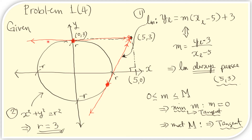Now that we know that the line with slope 0 is a tangent line, we can say that this line is perpendicular to the radius of the circle at the point of tangency. Because the slope is 0, this line is horizontal. Therefore, the distance from the point of tangency to the center of the circle — which is the radius — equals the distance from the point (5, 3) to the x-axis, which is 3. Therefore, the radius r equals 3.